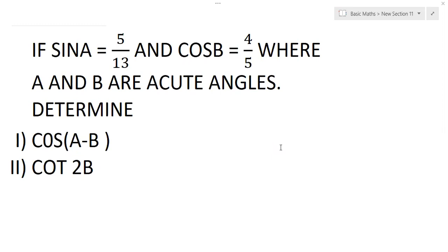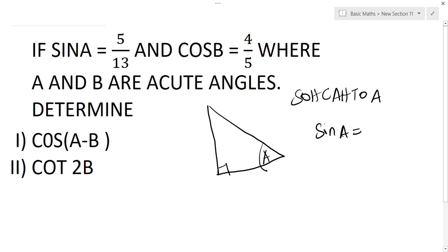So we know very well that if we are having a right angled triangle, and let's say this is our A, then using SOHCAHTOA, sine of A is given by opposite over hypotenuse. And our sine is 5 over 13, so our opposite will be 5 and hypotenuse is 13.